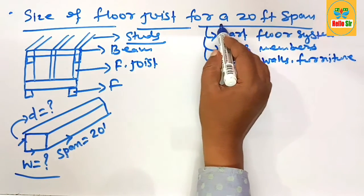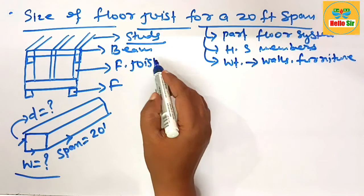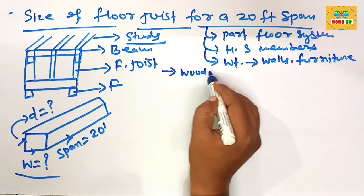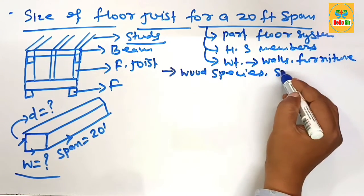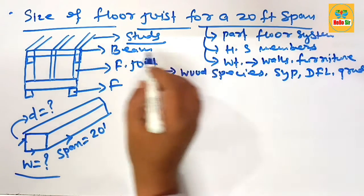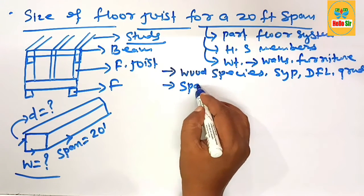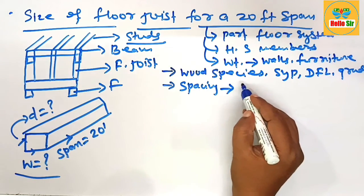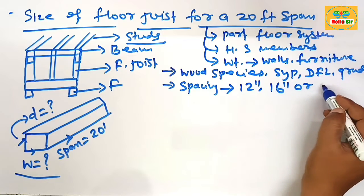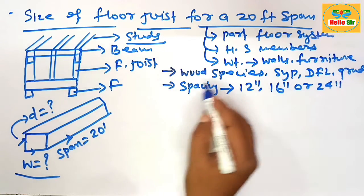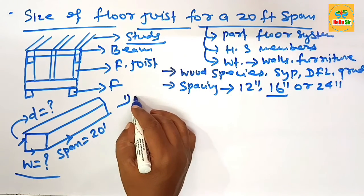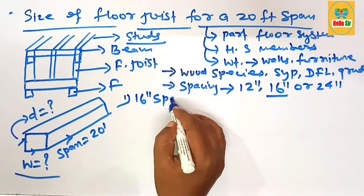The depth section of the floor joist depends on many factors — three main ones: the wood species (like SYP or DFL), the grade of the wood, and the spacing between the joists. Common spacing between floor joists includes 12 inches, 16 inches, or 24 inches, but the most common spacing is 16 inches.